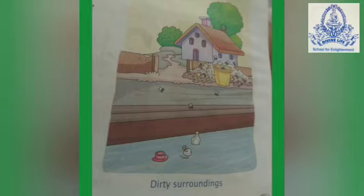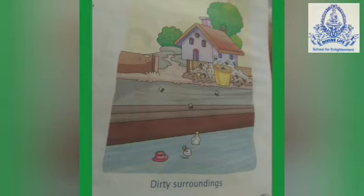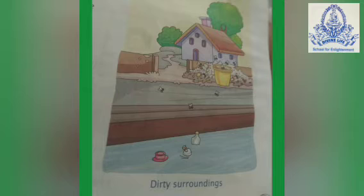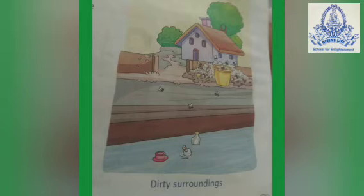So what makes our surrounding unclean and bad? The garbage thrown around us spreads germs and makes the air dirty. Garbage thrown into ponds and lakes makes the water unfit for drinking.